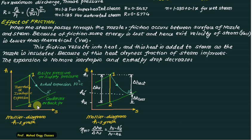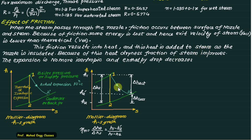Regarding the effect of friction: as steam passes through the nozzle, friction occurs between the nozzle surface and steam, causing energy loss and reducing exit velocity below the theoretical value. This lost kinetic energy is converted into heat. Since the nozzle is insulated, this heat cannot escape and is instead absorbed by the steam itself, improving the dryness fraction. This phenomenon is called internal reheating.